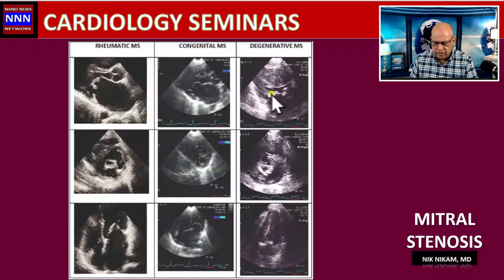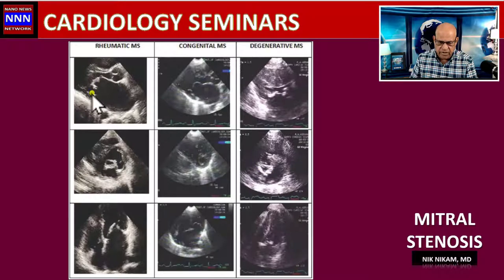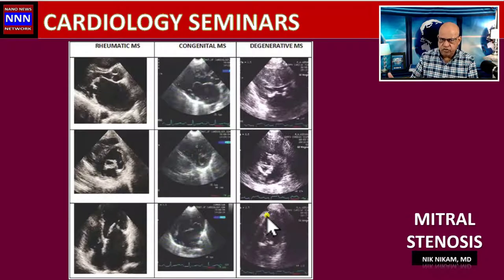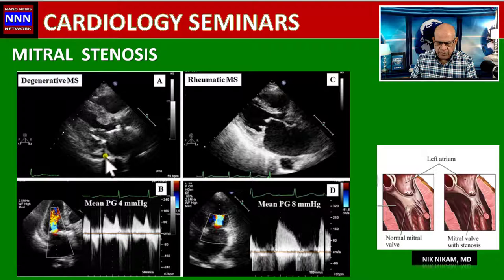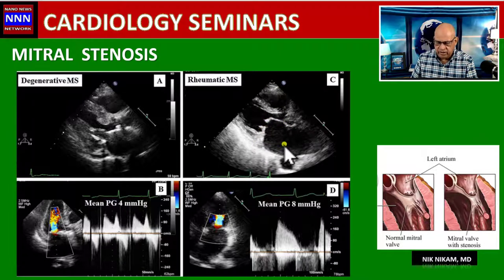We can see the degree of calcification, which is quite predominant with restricted movement. Along with leaflet changes, we also see structural changes in the heart itself — namely gross dilatation of the left atrium. The left atrial volume index is an important factor in determining the degree of mitral stenosis and pulmonary hypertension. Degenerative mitral stenosis shows extensive calcification extending to the chordae and mitral annular calcification, whereas rheumatic MS shows fibrosis, thickening, and restricted movement causing doming.